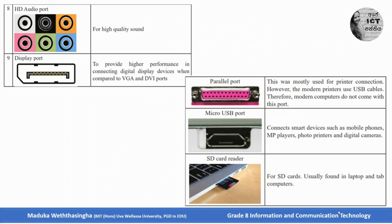Then the parallel port — we use this parallel port to connect printers. But in modern printers they use a USB cable, so now we can connect printers to our computers using USB. Then micro USB port — used to connect smart devices such as mobile phones, MP players, photo printers and digital cameras.